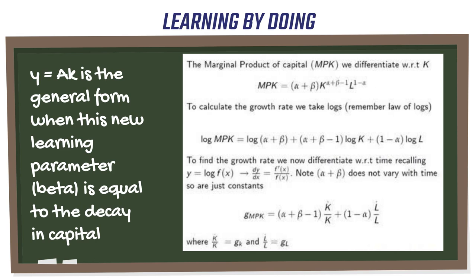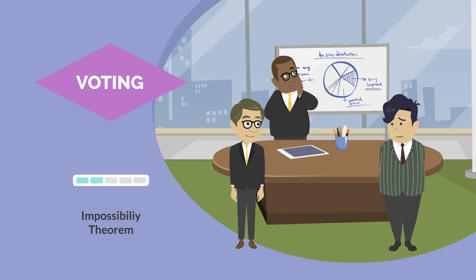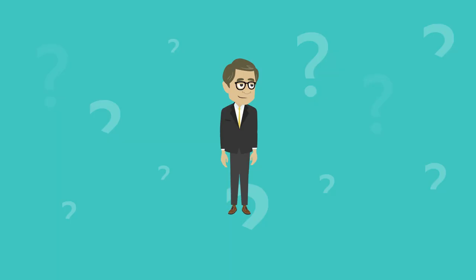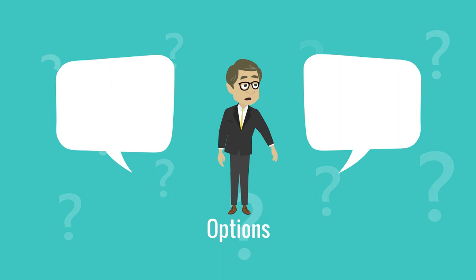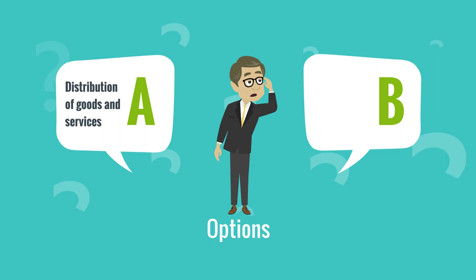The application of Arrow's general impossibility theorem has gone beyond democracy and election results. It has been used for both welfare economics and social justice, linked to the liberal paradox, which was developed by economist Amartya Sen. According to Sen and his paradox, there is generally a conflict between the distribution of goods and services in a society and individual freedom, as both cannot exist at the same time.